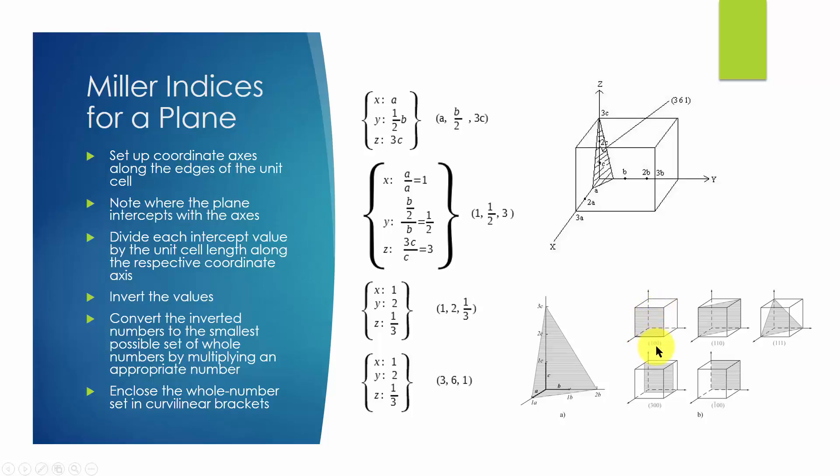This is why you see 0 in indices such as (100), which is parallel to y and z axis, or (110), which is parallel to z axis.